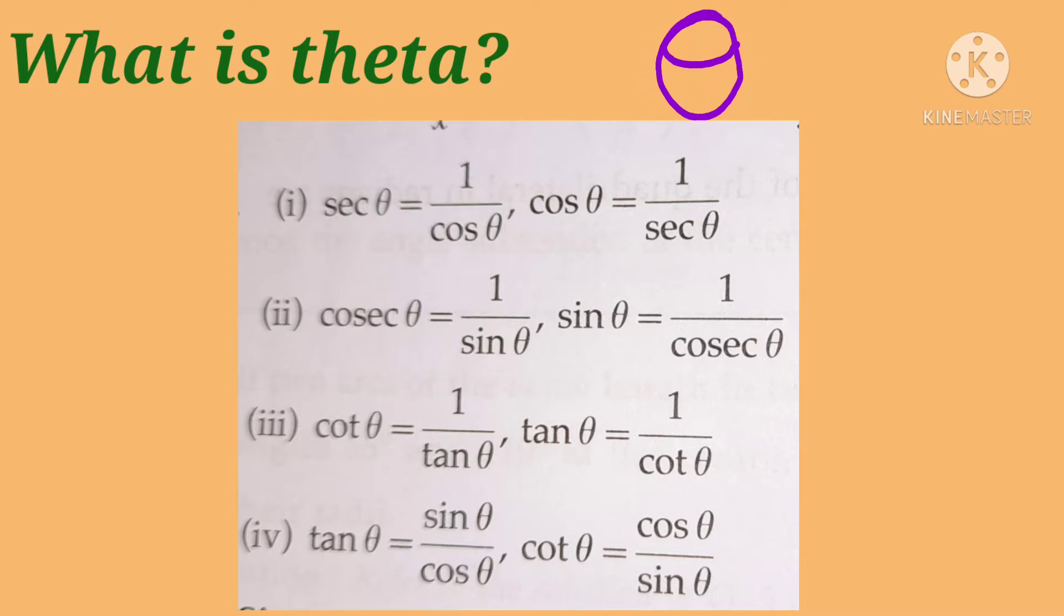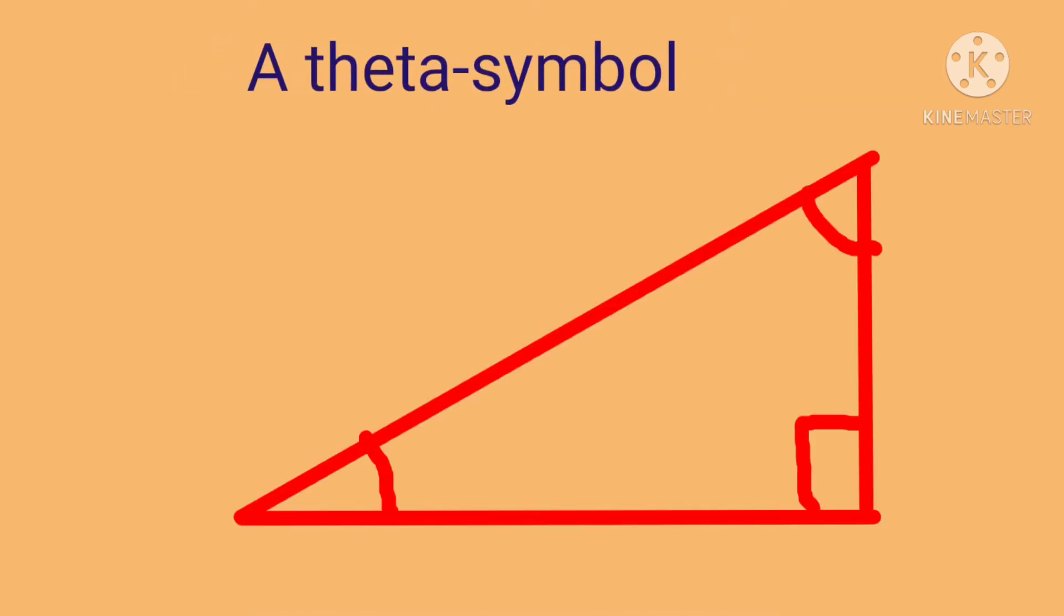So what does theta mean? Theta is nothing but a symbol used to denote the unknown measure of an angle. If we don't know the measure of an angle, we will just put the symbol theta.